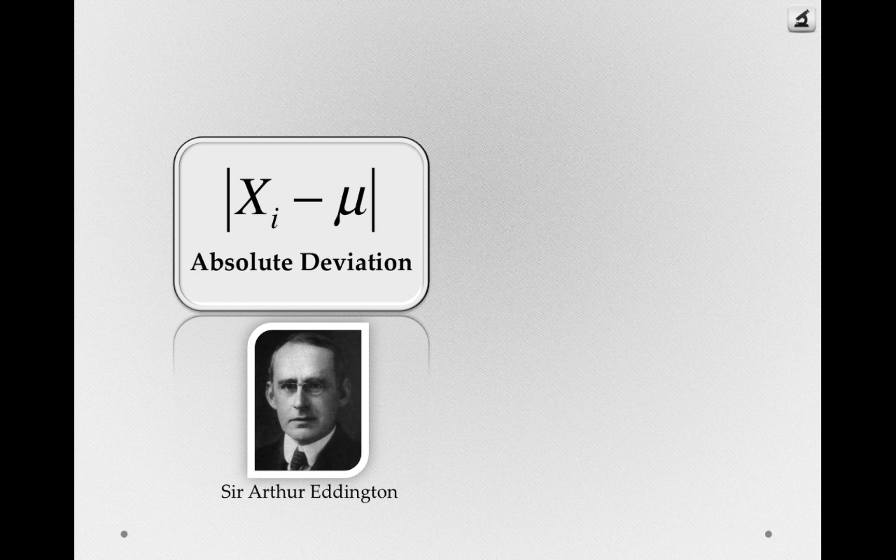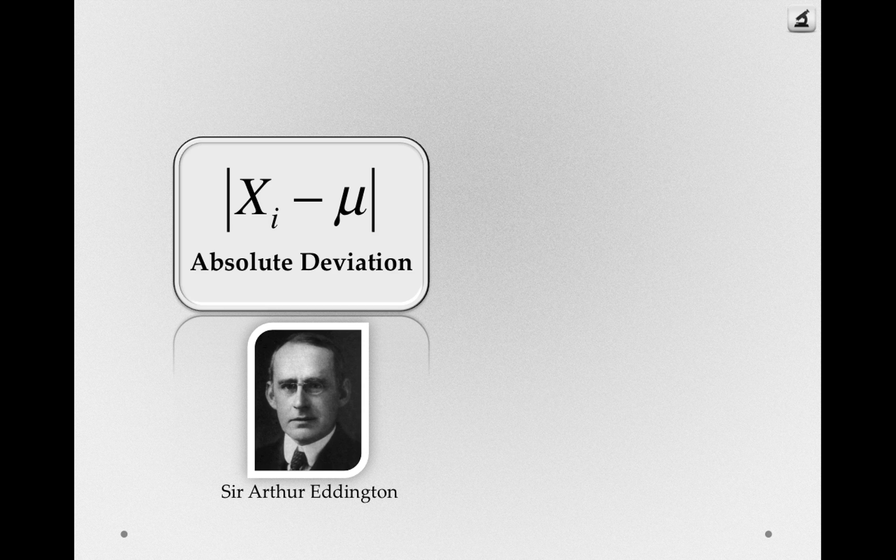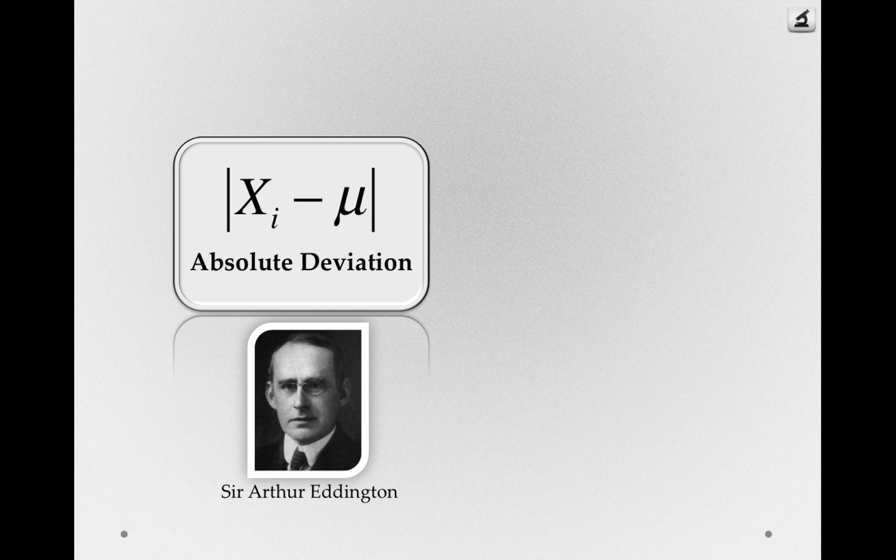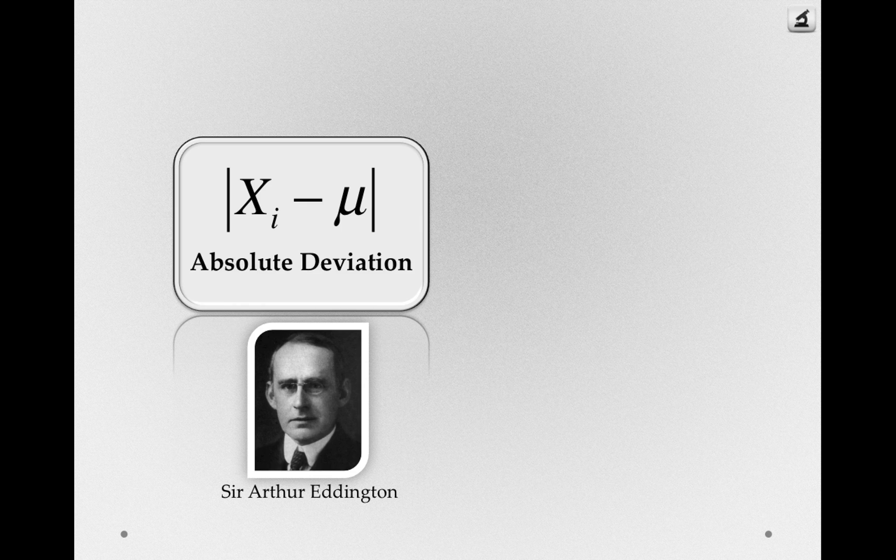Statistics and astronomy actually share a pretty large history. So Eddington was arguing that the absolute deviation would be the best way, or the most efficient way, to actually measure spread. Remember, we're trying to measure spread here in the service of capturing that important quantity in a distribution, but we're also going to have to use our samples to make inferences back to populations.